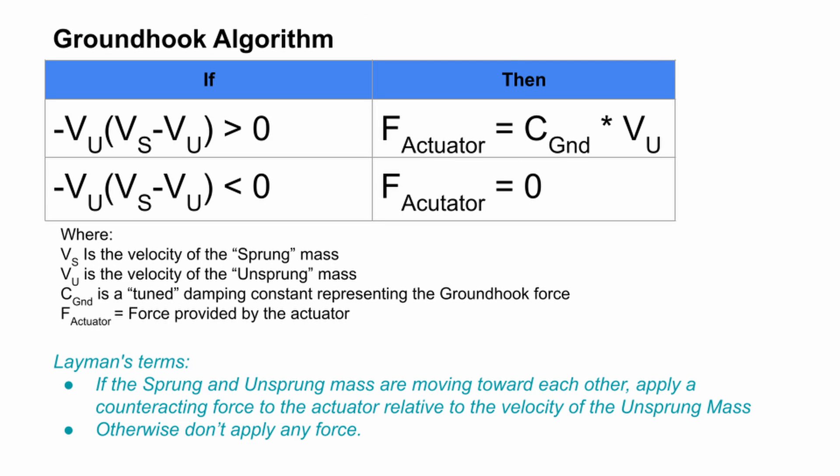So in this slide we're going to take a look at the algorithm for ground hook. When the sprung and unsprung masses are moving towards one another, the controller will apply a proportional force to the unsprung mass via the actuator. If the sprung and unsprung masses are moving away from each other, the actuator will actually apply zero force. Again, these are ideal scenarios and any real system will have limitations such as actuator strength, travel limits, responsiveness, lag in feedback, etc.